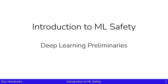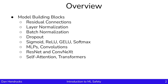This is an introduction to machine learning safety, and now let's discuss deep learning preliminaries. In our discussion of model building blocks, we'll talk about residual connections and normalization techniques. Then we'll move on to nonlinear components of neural networks, and finally talk about entire neural network architectures, such as transformers.